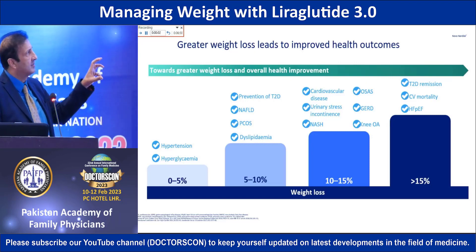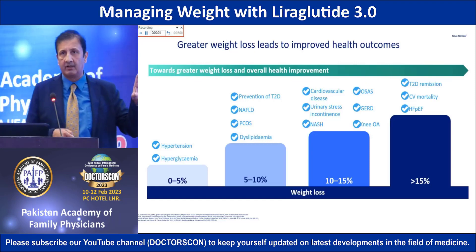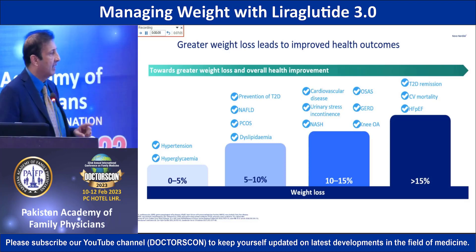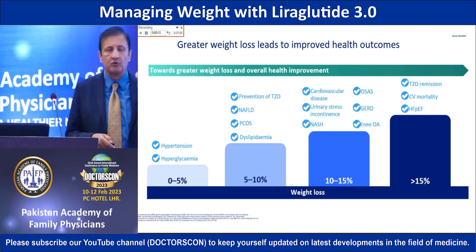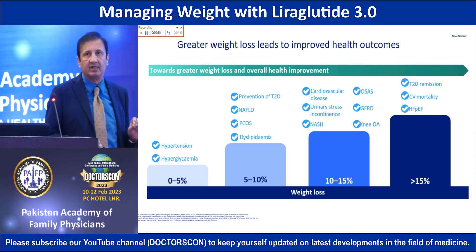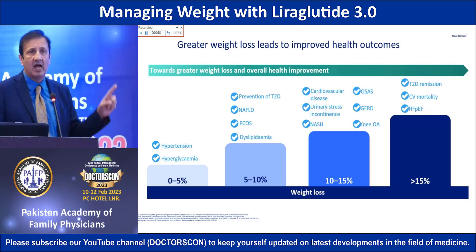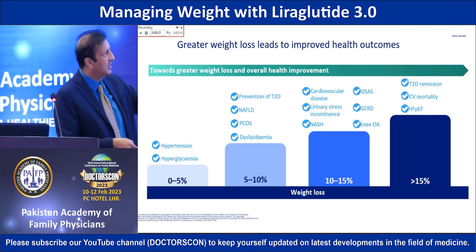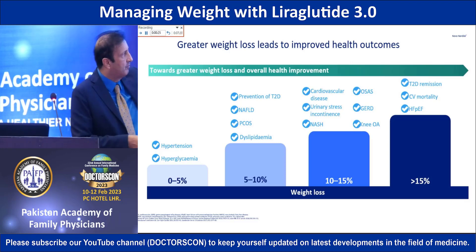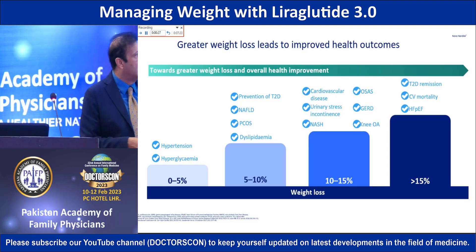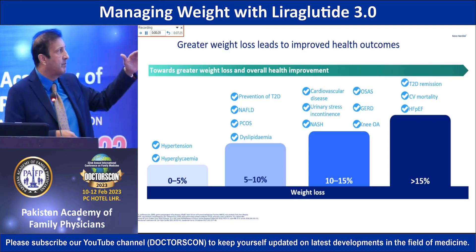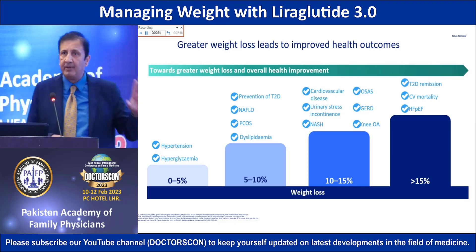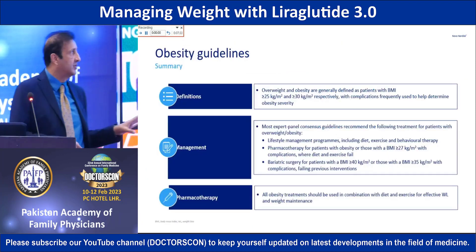Greater weight loss leads to improved health outcomes. Even a 0 to 5% weight loss reduces the risk of hypertension and hyperglycemia. A 5 to 10% loss helps prevent PCOS, dyslipidemia, and non-alcoholic fatty liver disease. A 10 to 15% loss brings in cardiac benefits, and more than 15% weight loss reduces diabetes risk and coronary artery disease risk.